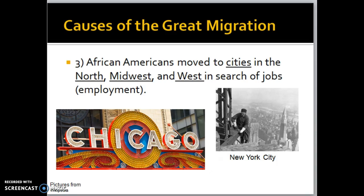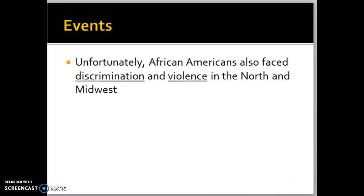The third cause is that African Americans are moving to cities in the north, midwest, and west in search of jobs and employment. Remember those industrial cities — many of them are in the north and the midwest, and some are developing in California. Many industries are looking for workers; they need people to come into the factories and do a job, and because there aren't enough workers to fill those positions, they employ African Americans as well. Unfortunately, African Americans still face violence and discrimination in the north, but they often do have more access to job and education opportunities, even though full equality is still not achieved.